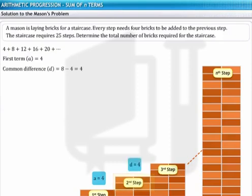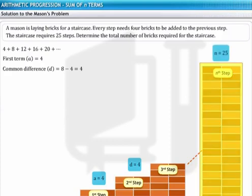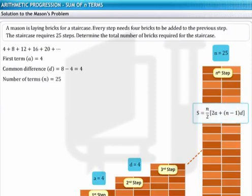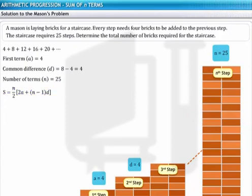Common difference D is 4, and the total number of steps in the staircase equals the number of terms in the progression, N, which is 25. You can apply the formula for sum of N terms to the given data. Substituting the values of N, A, and D in the formula, you get the value for the sum of N terms, S.